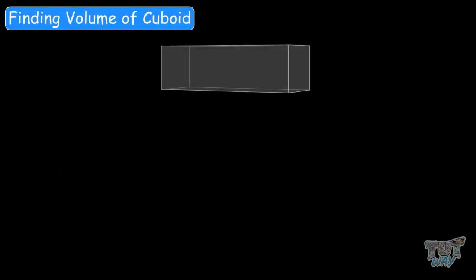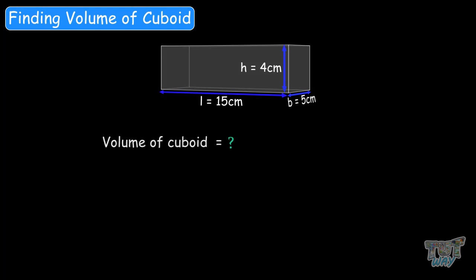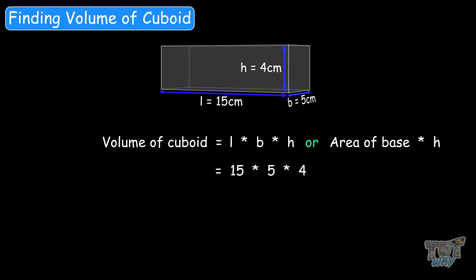Now here we have a cuboid with a length of 15 centimeters, width 5 centimeters, and height 4 centimeters. We have to find the volume. How will we find the volume of a cuboid? You multiply length with breadth with height, or equivalently, the area of the base with height. So 15 times 5 times 4 equals 300 centimeters cubed.